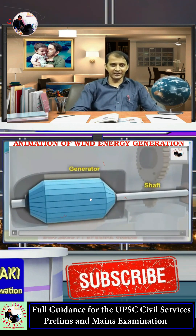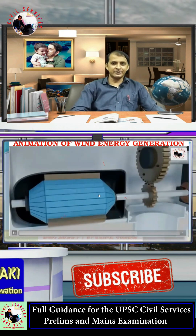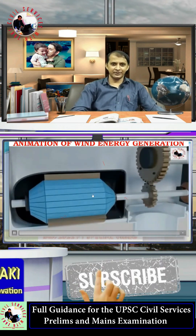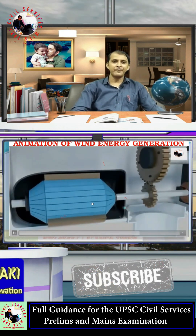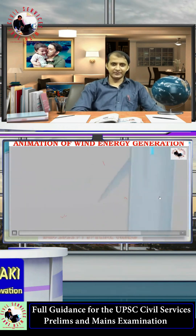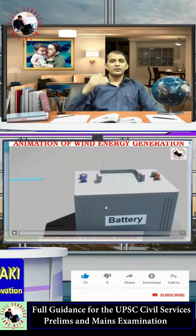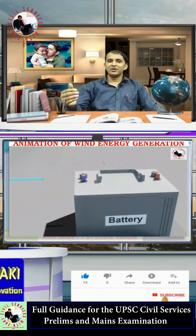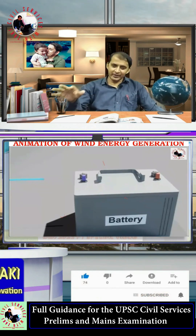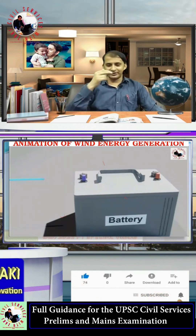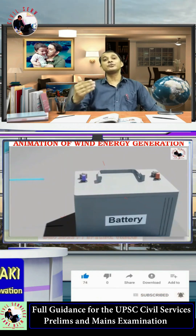Finally, the gearbox is connected to the generator. The generator produces electricity, which can be used directly or stored in a battery — so there are two methods for using the generated electricity.